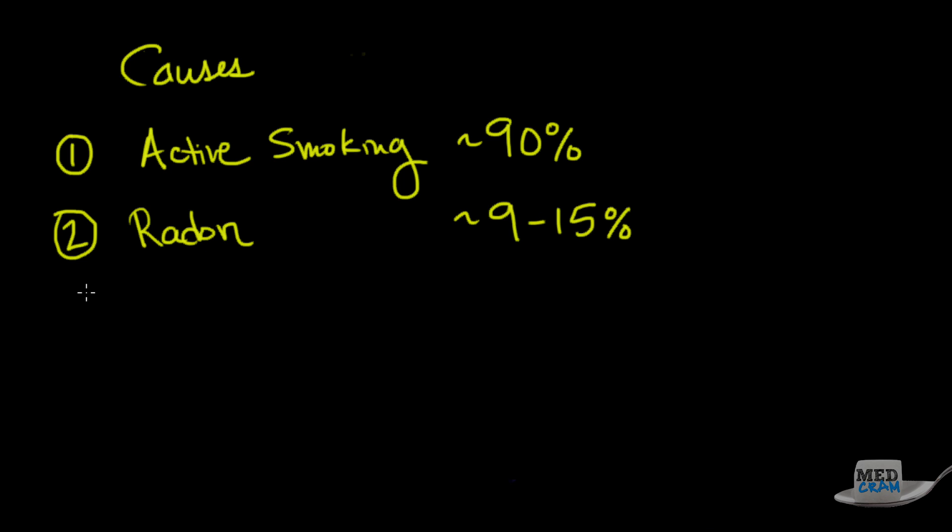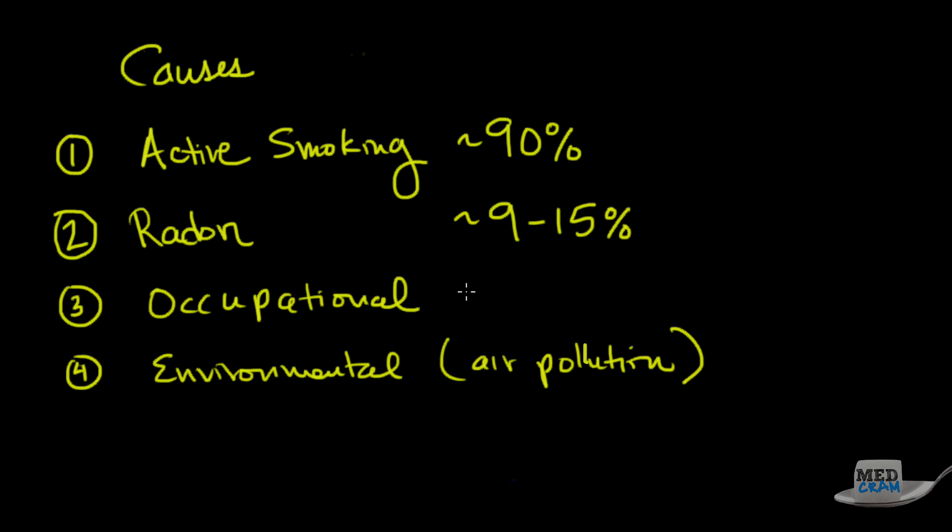In terms of causes, the number one cause of lung cancer is still active smoking, and they figure that's about 90%. So what's the other 10%? It's possible that this may actually add up to more than 100% because there's usually multiple things doing it. But believe it or not, radon, which is a gas that's found in the soil, causes about 9 to 15% of lung cancer. Number three is occupational. Number four is environmental, so basically air pollution. Occupational accounts for about 10%, environmental about 1 to 2%. Let's talk a little bit about the pathophysiology of this.